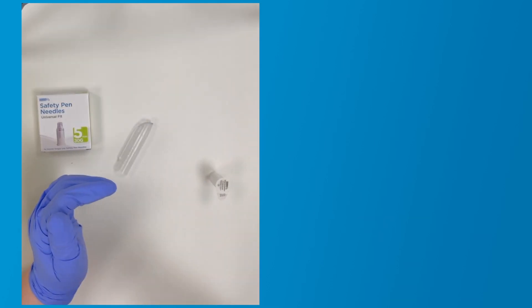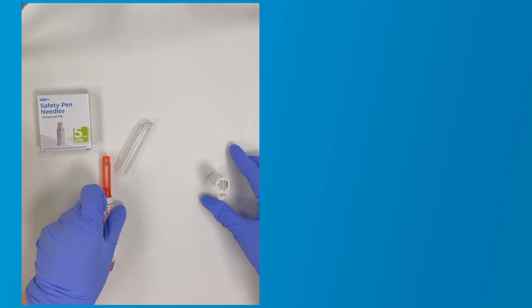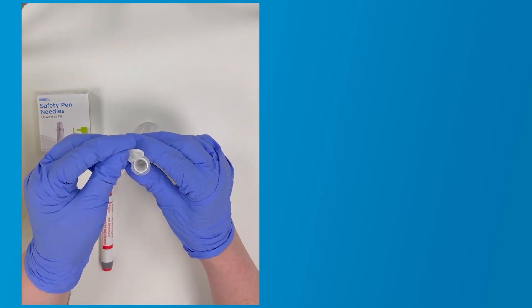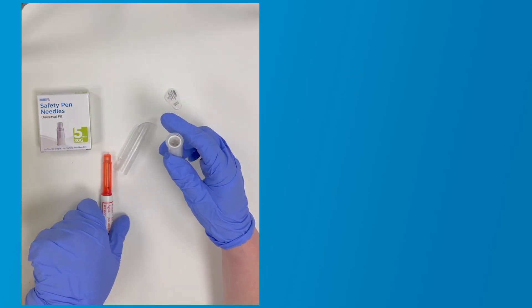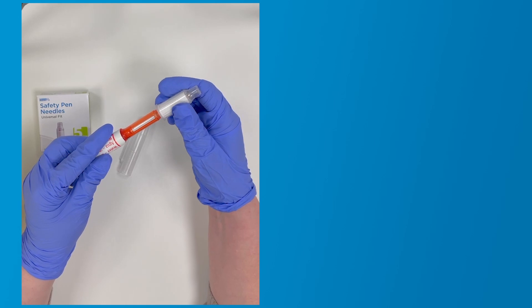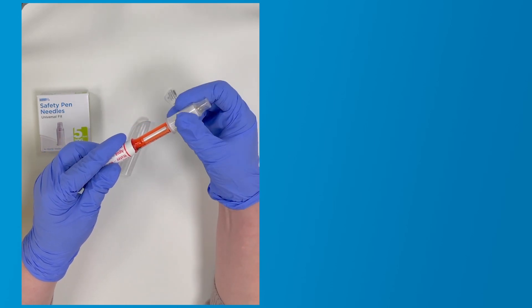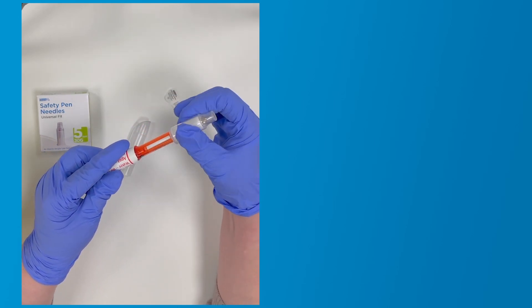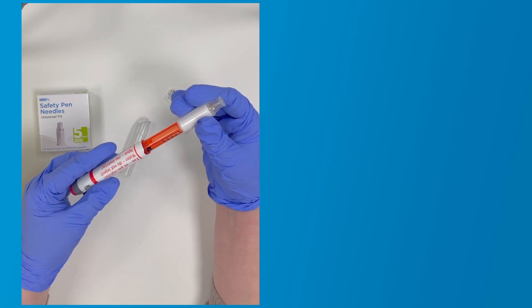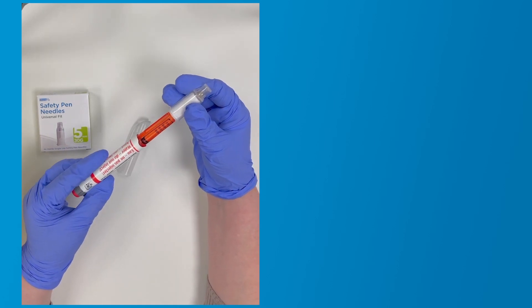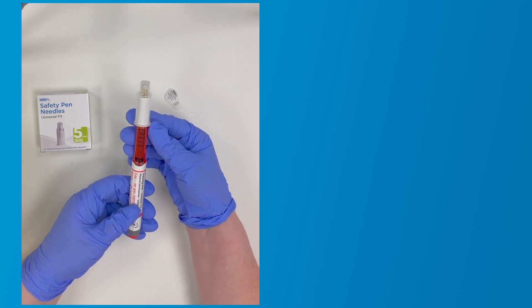Remove the paper seal from the GlucoRx safety pen needle. Holding the outer cover, push and screw the GlucoRx safety pen needle onto the insulin pen in a clockwise direction until you feel resistance. Our GlucoRx safety pen needles have universal fit on all insulin pens.